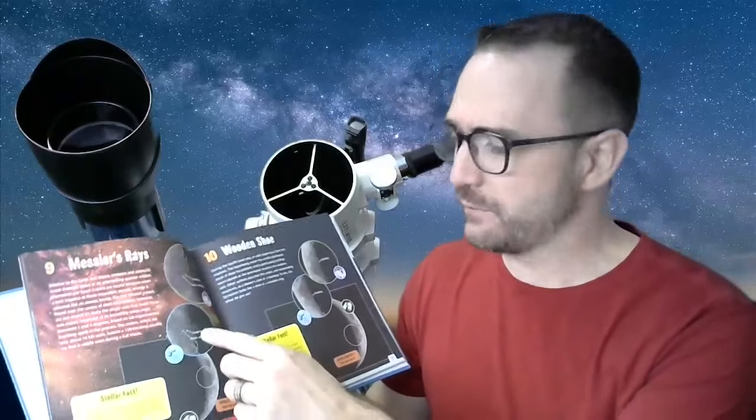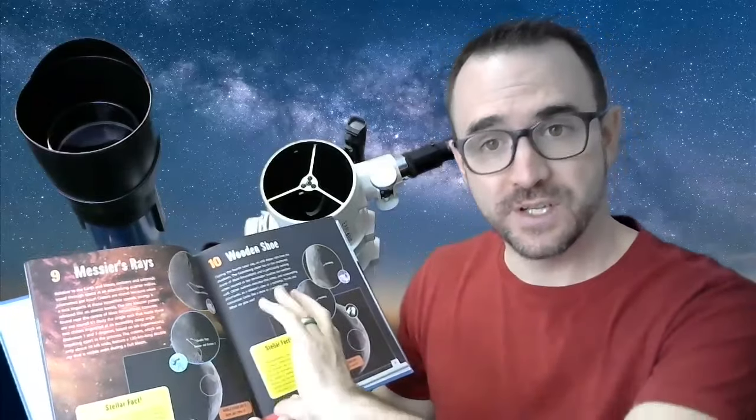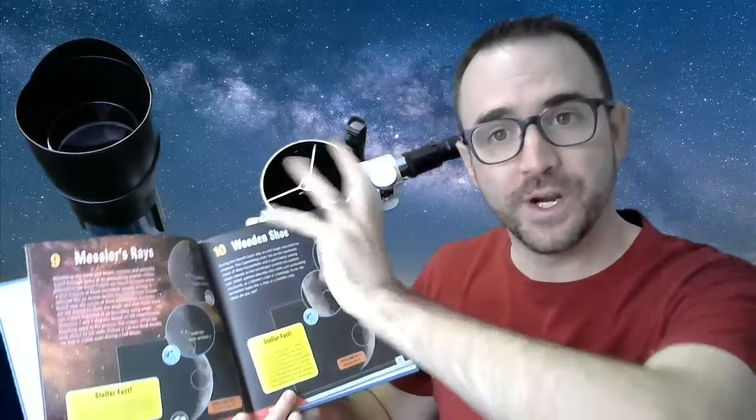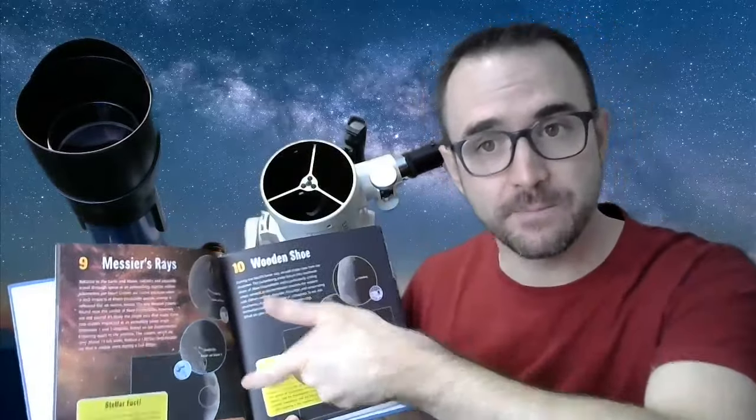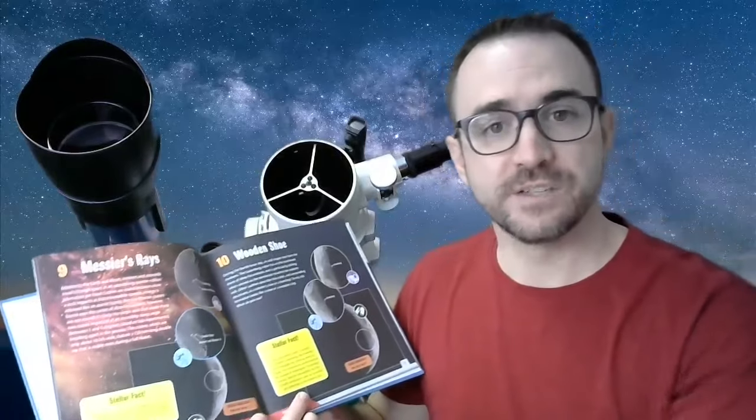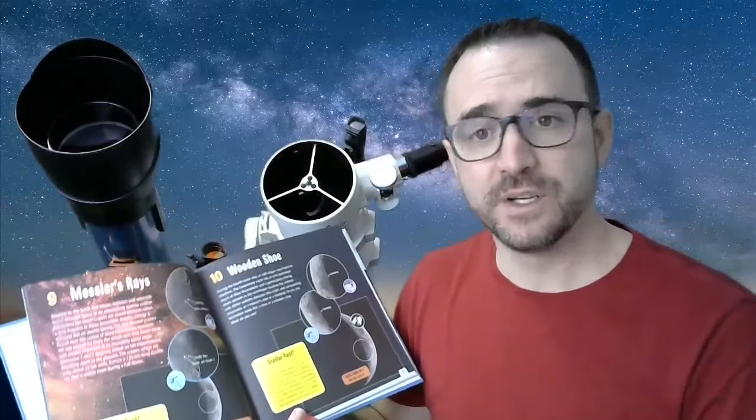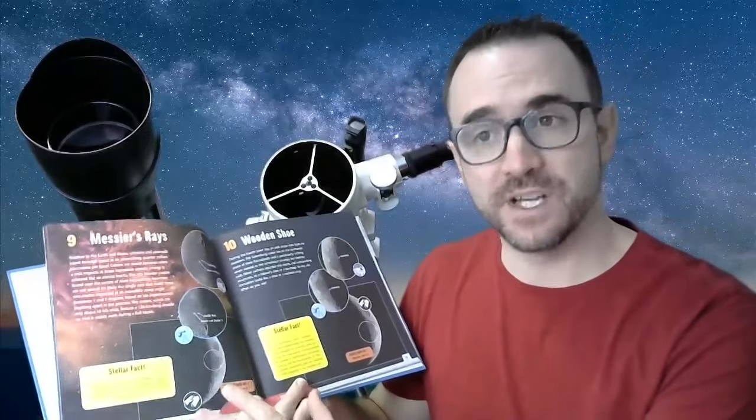This book includes three views of each target. One for those using a refractor telescope, which shows a mirror rotation. One for a Newtonian telescope, which includes a 180 degree rotation. And the large image is for binocular or spotting scope users, which does not include any rotation to the view.